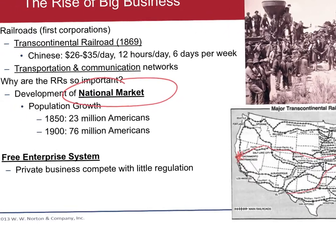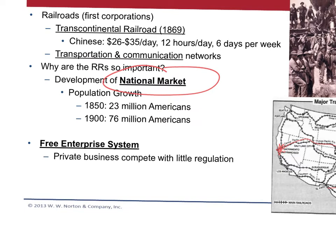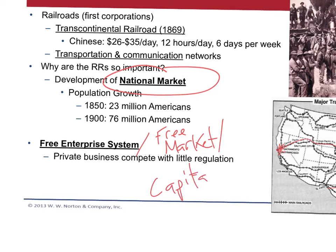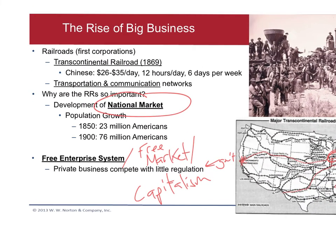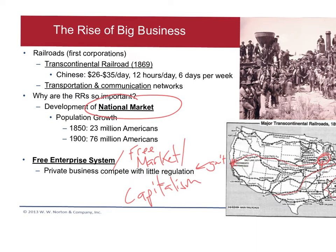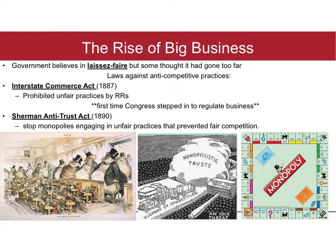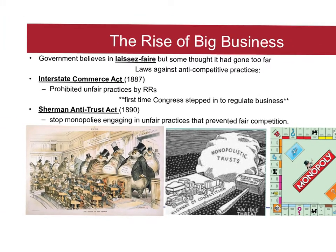At this point in time there's a firm belief in a free enterprise system, also called the free market or capitalism. All three terms describe the same idea — private businesses can compete with little regulation from the government. The government stays out. It's been truly free enterprise up until this point in history, but now we start to see that change.